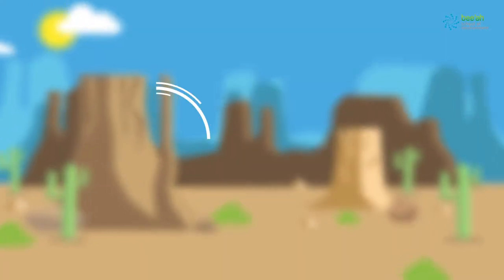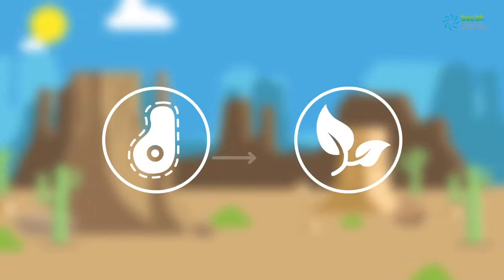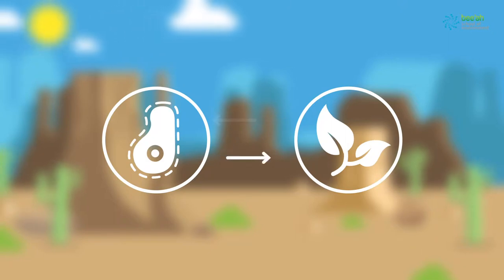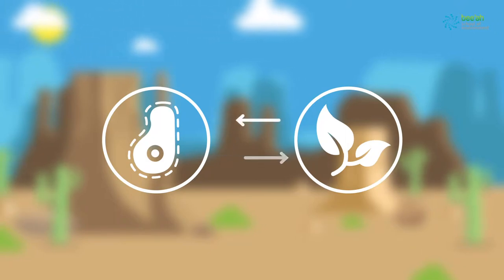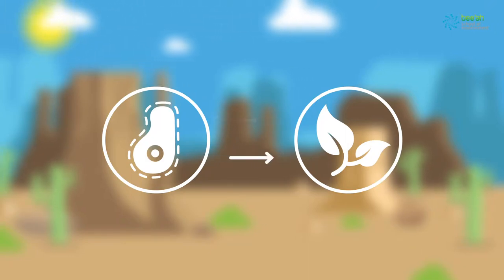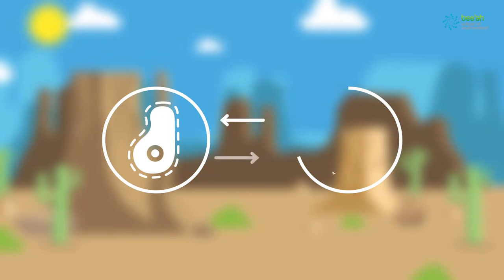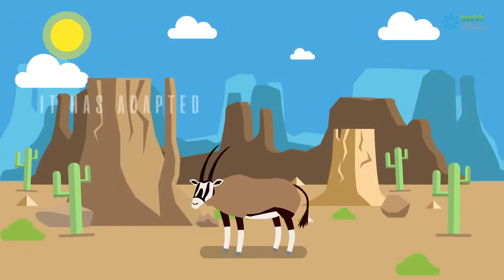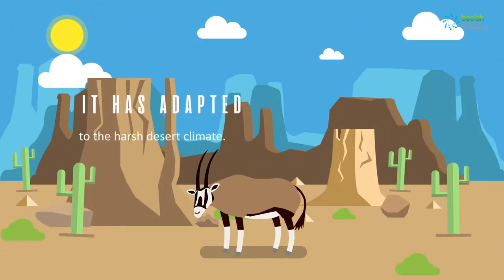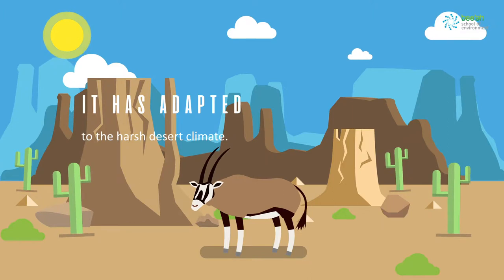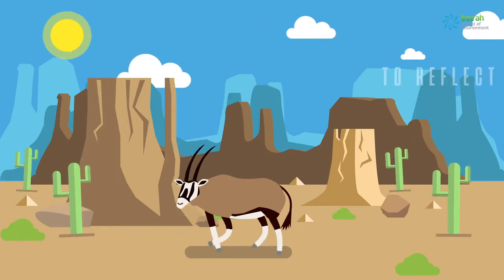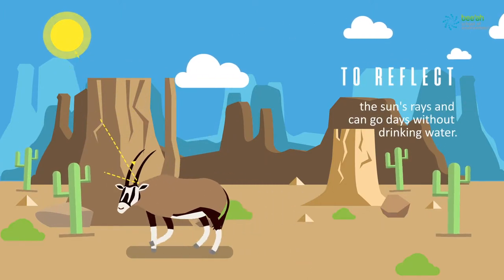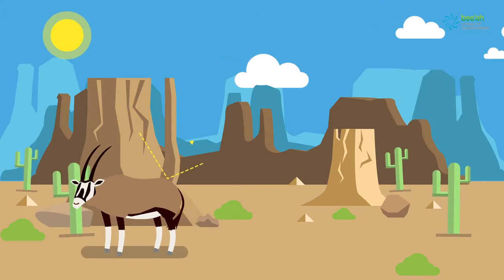Does an organism adapt to the environment, or does the environment adapt to the organisms? Every organism adapts to suit its natural environment. Take the Arabian Oryx — it has adapted to the harsh desert climate. It has a white coat to reflect the Sun's rays and can go days without drinking water.